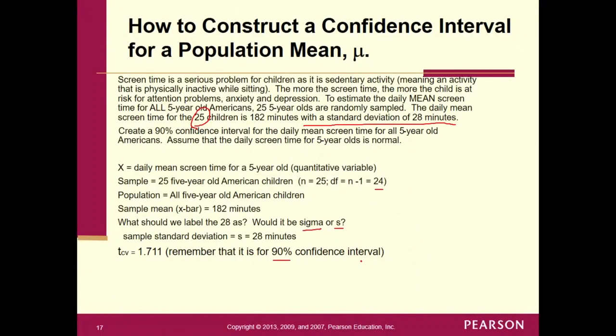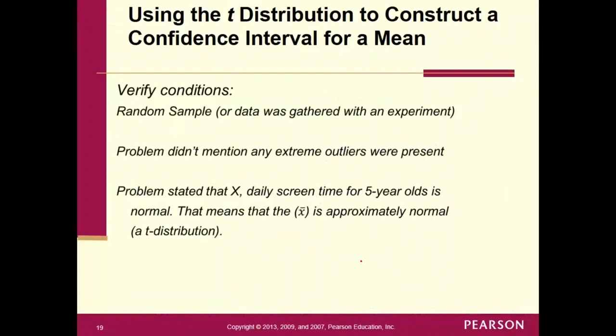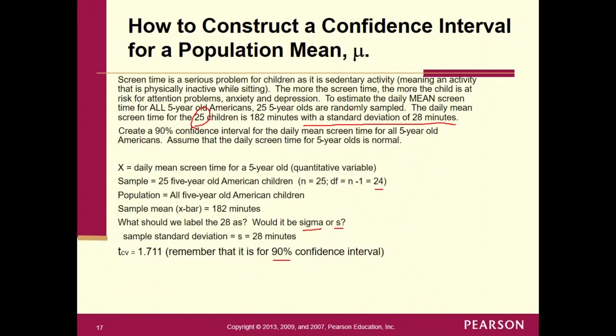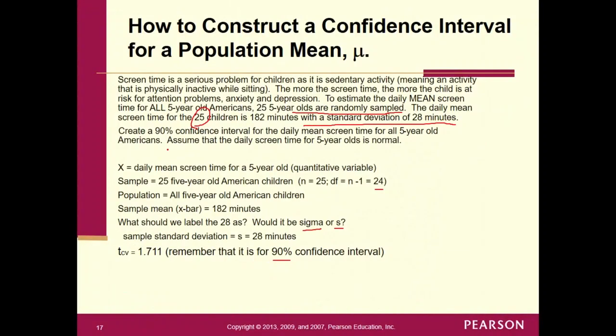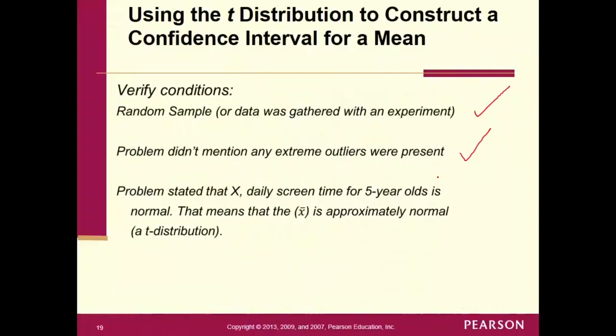So now, let's work through all the problems. Remember the steps. The steps is that you have to verify conditions. So we'll verify the conditions, we'll work out the math, and then we'll do the interpretation. So verify conditions. One, you need a random sample. So let's go back to the problem. It says here that the 25 five-year-olds were randomly sampled. So we got that one. Two, problem didn't mention anything about extreme outliers, so we got that one. And then three, problem stated that x, daily screen time for five-year-olds is normal. That means that the sampling distribution of x̄ is approximately normal. It's a t-distribution. Let's go back. Last sentence: Assume that the daily screen time for five-year-olds is normal. So we have all the conditions, we can use the formula that I gave you.